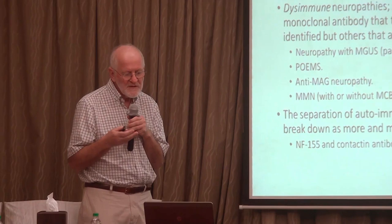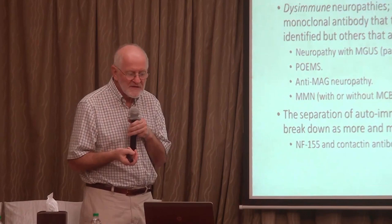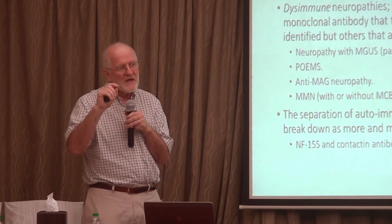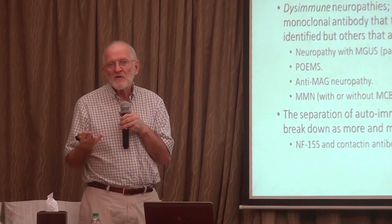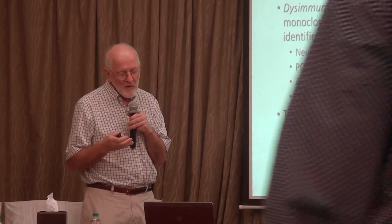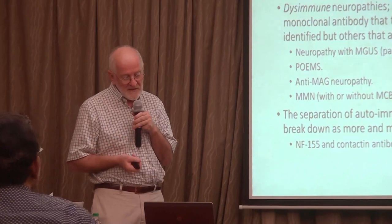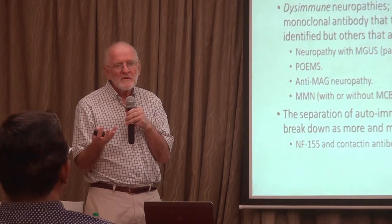On the other side are conditions in which we know absolutely what the neural target is. Anti-MAG neuropathy targets myelin-associated glycoprotein, a protein essential for the maintenance of compacted myelin. Multifocal motor neuropathy, which we'll return to, is almost certainly the result of antibodies against GM1 ganglioside. We do have to recognize that the separation between what is autoimmune and what is disimmune may break down as we get to understand the immune response better.